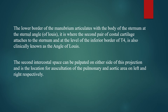The lower border of the manubrium articulates with the body of the sternum at the sternal angle, known as the angle of Louis. It is at the level of the inferior border of T4, and this is where the second pair of costal cartilage attaches. The second intercostal space can be palpated on either side of this projection and is the location for auscultation of the pulmonary and aortic areas on left and right sides respectively.